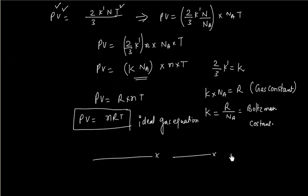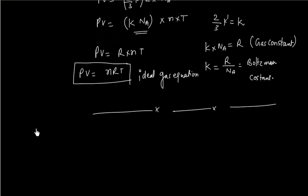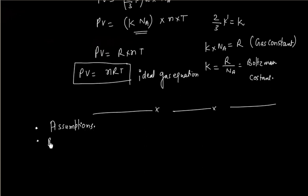In this lecture we discussed the different assumptions — the hypotheses — of kinetic theory of gases, and then showed how we can prove PV = nRT using kinetic theory of gases.